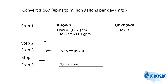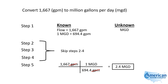This makes converting between GPM and MGD a lot easier if you know that. I'll just take my 1,667 GPM and use the equivalent that says there are 694.4 gallons per minute for every one MGD. The GPM cancel out and I'm left with units of million gallons per day. So I'll take 1,667 and divide it by 694.4, and I come up with that same answer: 2.4 MGD. This is a one-step process, compared to the previous method where we used 1,440 and also divided by a million — that was a three-stepper.